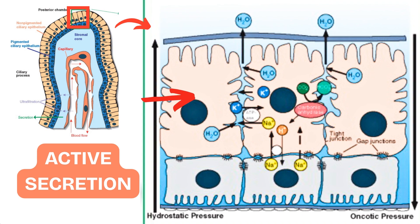If you have any confusion about the outer and inner layers of the ciliary body or the iris, you can visit our videos on the anatomy of the iris and the ciliary body. It is the non-pigmented epithelium which plays a primary role in aqueous secretion.